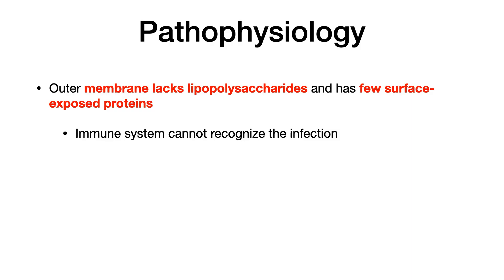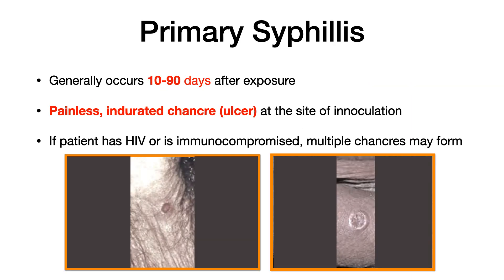Primary syphilis generally occurs approximately 10 to 90 days after sexually transmitted exposure. The hallmark symptom is a painless chancre — a fancy word for ulcer — and it is indurated. You can see that cupping or crater on the outer boundary of the chancre; that's induration, and it's a key finding. If you see an image like this, especially on a penis, chances are it's alluding to primary syphilis. The chancre tends to occur at the site of inoculation.